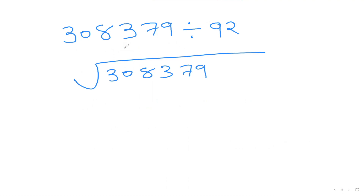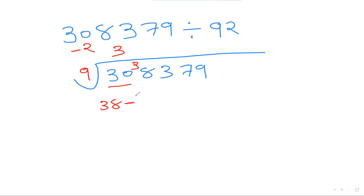The last question — a really challenging one: 308379 divided by 92. The number closest to 92 is 90, so I write 9 here. To get from 92 to 90 I subtract 2, so I put down −2. Starting with 30: 9×3=27, remainder 3, giving 38.